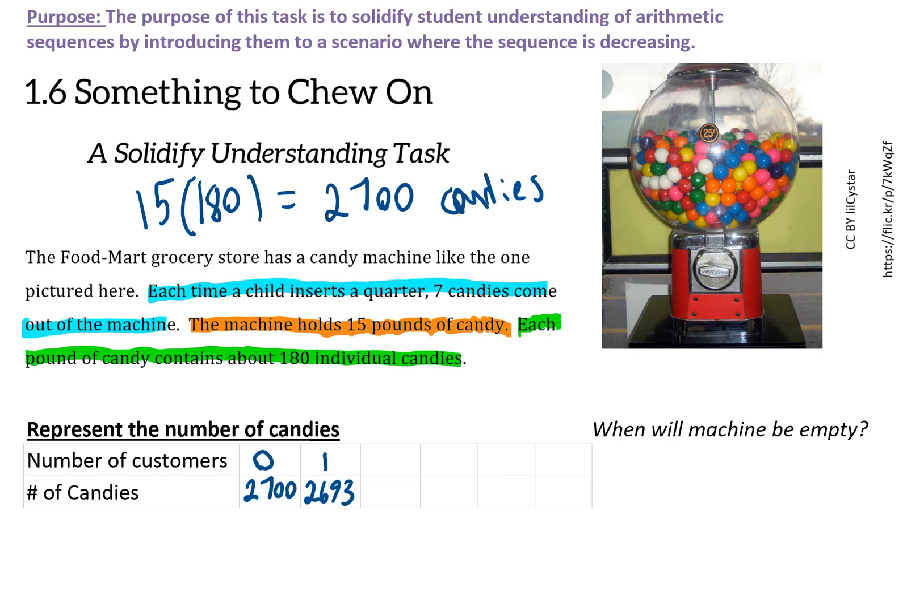The next customer brings us down to 2,686, then 2,679, then 2,672, and the fifth customer brings us to 2,665 candies.